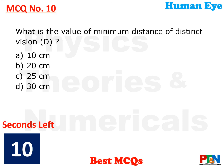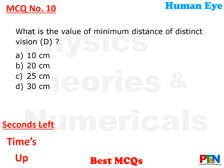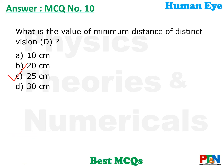Next MCQ. What is the value of the minimum distance of distinct vision, also called the least distance of distinct vision? Options: 10 cm, 20 cm, 25 cm, 30 cm. 10 seconds time. The answer is 25 cm.